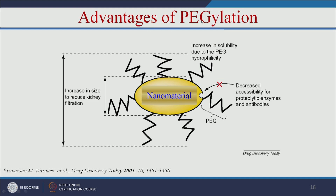The advantages of PEGylation — addition of polyethylene glycol — are: it increases the size to reduce kidney filtration, increases solubility due to PEG hydrophilicity, and decreases the accessibility of proteolytic enzymes and antibodies. So PEG protects your nanomaterial from the immune system and also reduces filtration by the kidney.